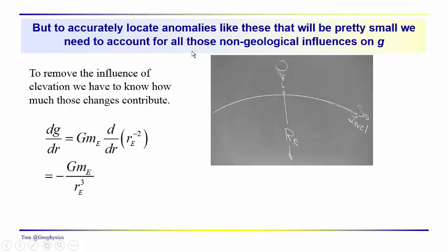So we know that elevation, for example, is a non-geological influence on your observations of the acceleration due to gravity. It really has nothing at all to do with subsurface geology, but we also learned that these changes can be larger than the anomalies produced by geological features that we're interested in. We saw that in the case of the karst feature that we talked about. So we did set this up previously. We said, okay, well, in order to remove the influence of elevation, we have to know how much those changes contribute. So we calculate the derivative of the acceleration.